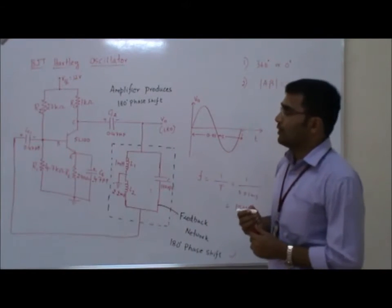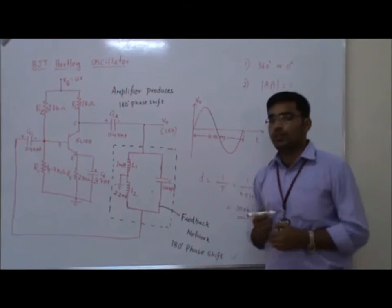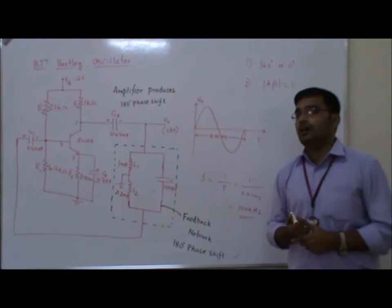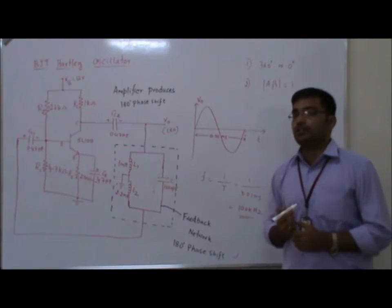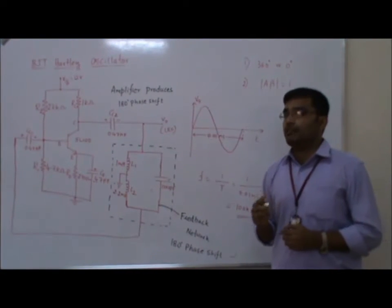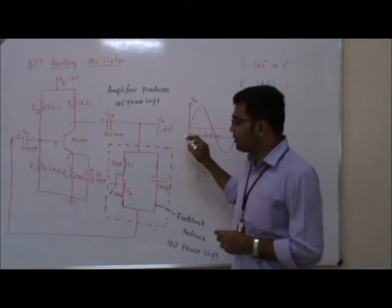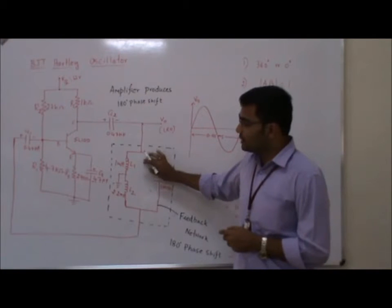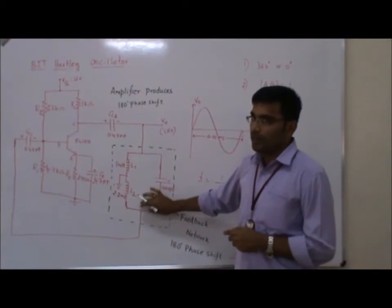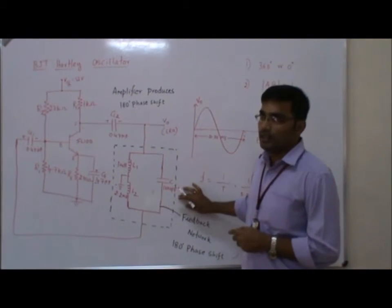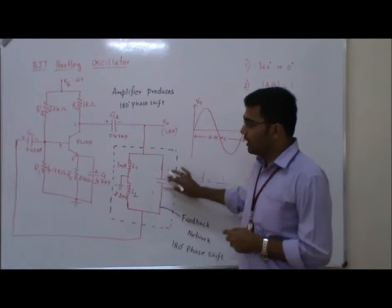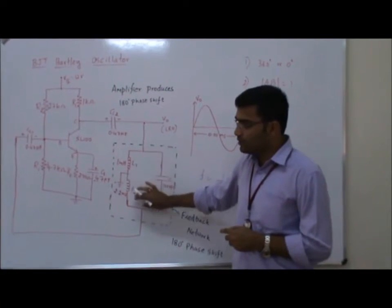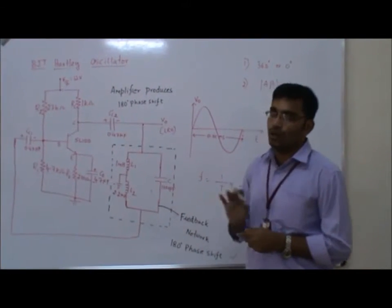LC oscillators have two main types: BJT Colpitts oscillator and BJT Hartley oscillator, classified based on the feedback network. If using two inductances connected in series with one capacitance, it's called a Hartley oscillator. If using two capacitances in series with one inductance, it's called a Colpitts oscillator.